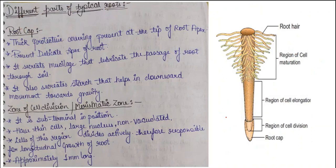Now let us study the different parts of a root. First is the root cap. Initially at the root tip, there are soft and delicate tissues which elongate. There is a covering that protects the root apex and tip — this is the root cap. The root cap protects these delicate tissues from the harsh soil as the root penetrates through soil particles and rock particles.